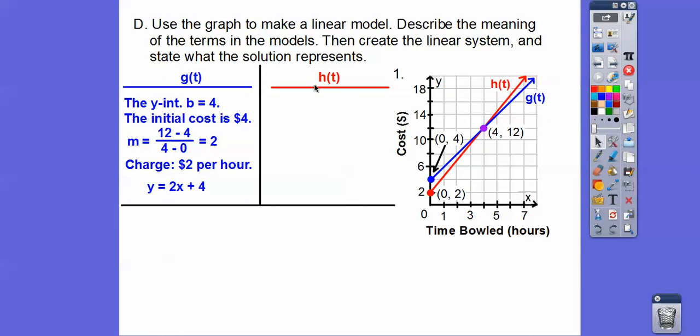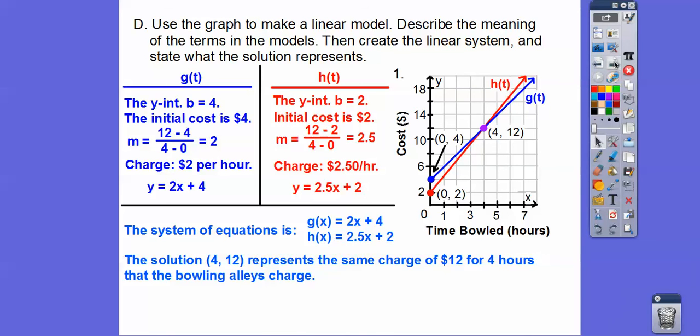Let's do that for this one. The initial cost of this one is two, so it's going to be two bucks. And the slope between four twelve and zero two is two point five. So they're going to charge two fifty per hour on that one. So y equals mx plus b.